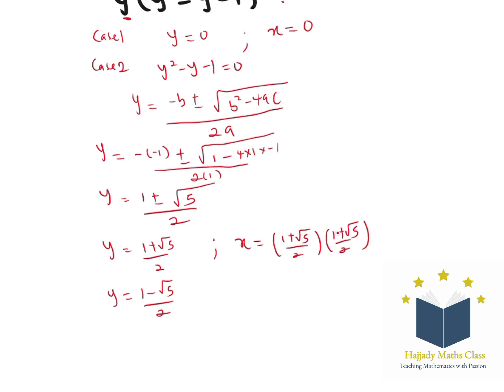So multiplying this out, we're going to have 1 plus 2 root 5 plus 5 over 4. So my x is going to be 6 plus 2 root 5 over 4. Finally, x equals 3 plus root 5.